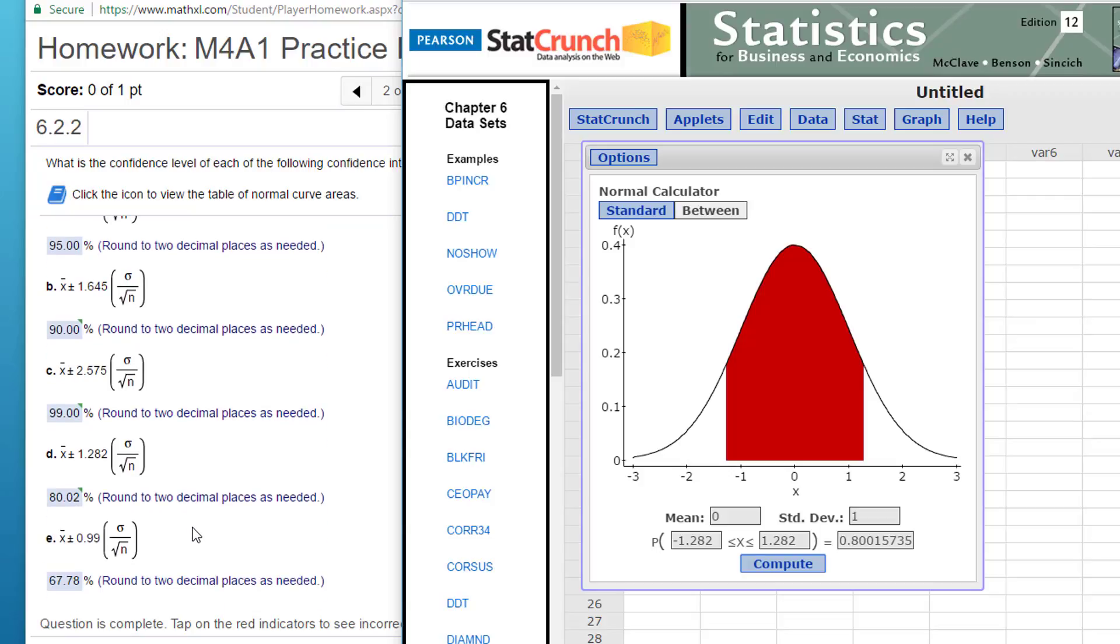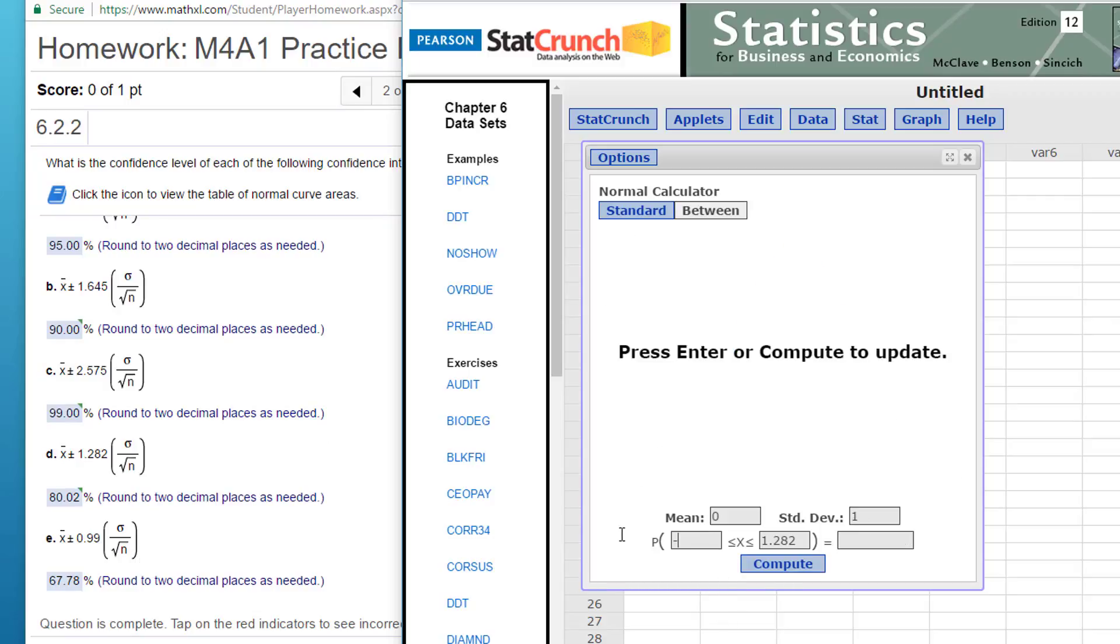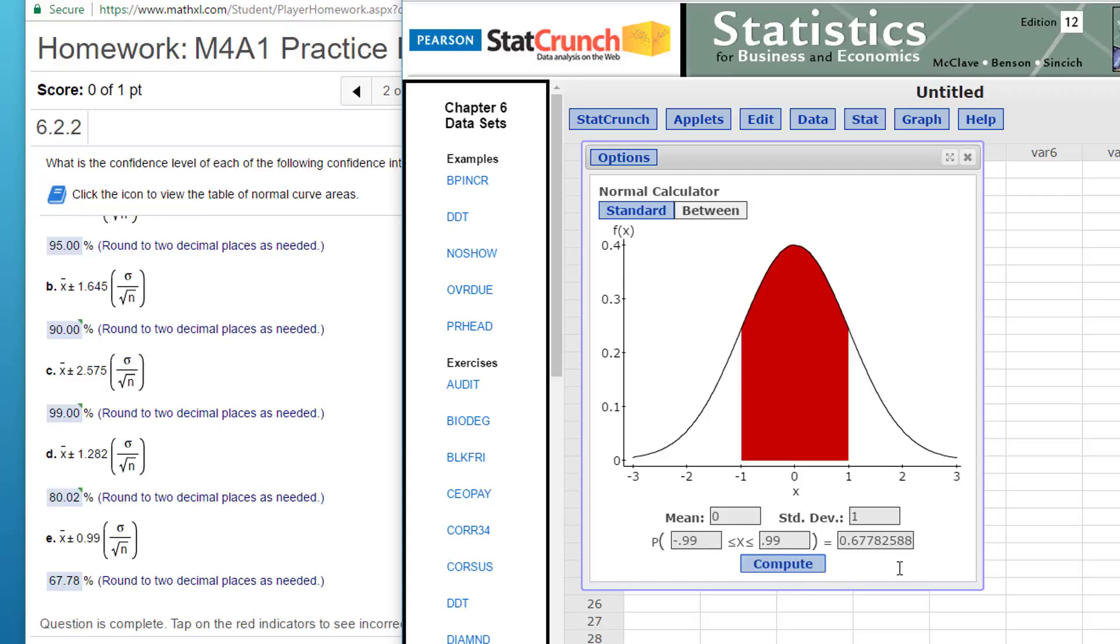E is 0.99. So I put minus 0.99 plus 0.99. Click compute. And that's a 67.78% confidence interval. And that's the answer to the last part. So I hope this helped.